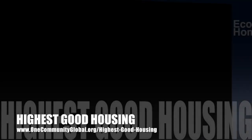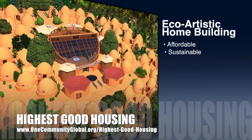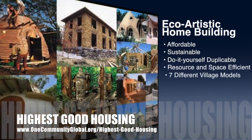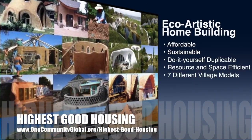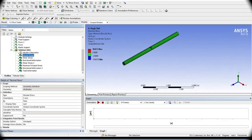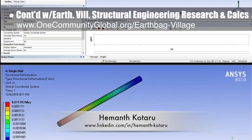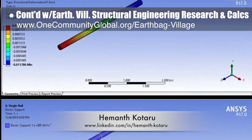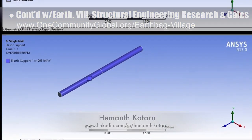One Community's approach to Highest Good Housing is eco-artistic home building that is affordable, sustainable, do-it-yourself duplicable, resource and space efficient, and consists of seven different sustainably constructed village models. Hamanth Kotaru, structural engineer, completed his 27th week helping with the structural engineering research and calculations for the earthbag village. This week's focus was beginning the first round of new nail stress tests. You can see some of this work in progress here.